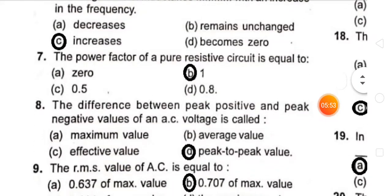The difference between peak positive and peak negative values of an AC voltage is called the peak-to-peak value. In a sine wave, the positive half cycle has a peak value and the negative half cycle has a peak value; together they give the peak-to-peak value.